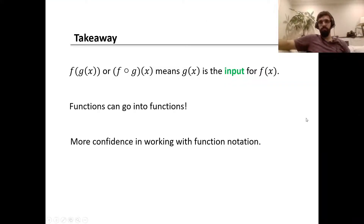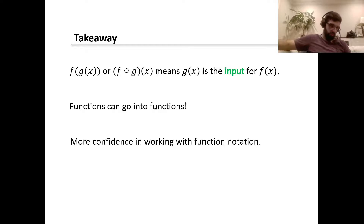So the takeaways: we now know what it looks like to do a function composition and how to say it — it's f of g of x. There are two ways to write it, and it means we're using a function as an input for another function. Hopefully after doing some practice with these problems, you have a bit more confidence working with function notation as it gets more complex.